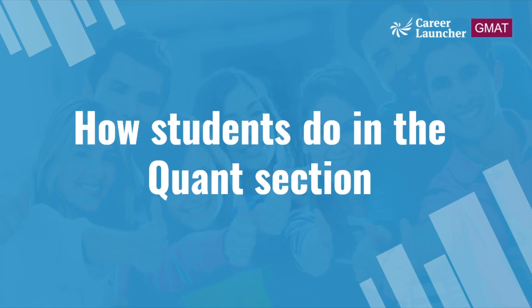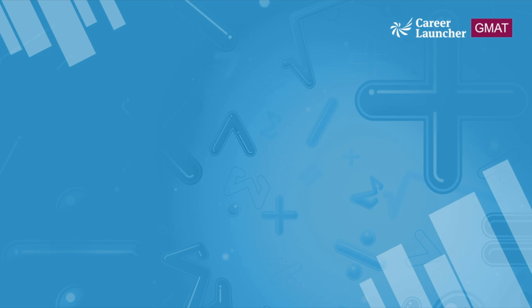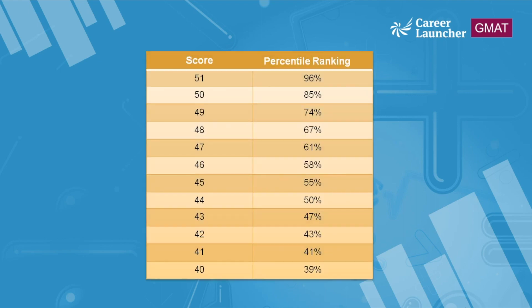Let's take a look at how students perform in the quant section. The quant section is scored on a scale of 0 to 60, though in practice the score range is 6 to 51. There is a huge variance in percentile in the 46 to 51 score range: a score of 51 gives a 96th percentile, 50 gives an 85th percentile, 49 drops to 74th percentile, 48 is 67th percentile, and 45 comes down to 55th percentile.